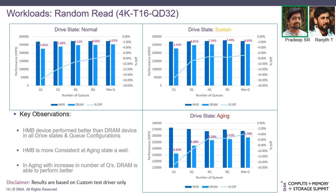In the case of random read with 4K chunk size, 16 threads, queue depth 32, the results are almost the same as the one-thread results. HMB performed slightly better across all drive states, and in the aging state it was more consistent. DRAM was able to bridge the gap with a higher number of queues in the aging state.